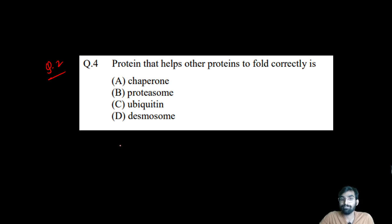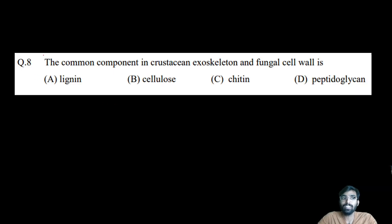Question number three: The common component in crustacean exoskeleton and fungal cell wall is lignin, cellulose, chitin, or peptidoglycan? There is something special in fungal cell wall. The option is chitin. Cellulose is in plant cell wall, lignin as well, and peptidoglycan generally in bacterial cell wall.